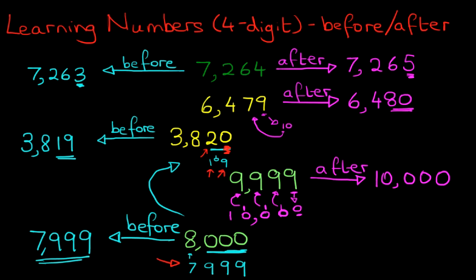Here all 4 digits have changed. So that is how we work out the number before and after with 4 digit numbers.